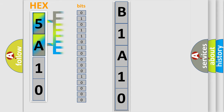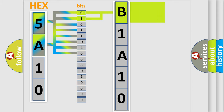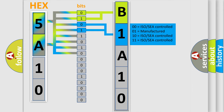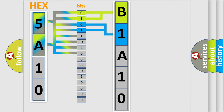The bit has two logical states: zero, which is low level, and one, which is high level. By combining the first two bits, the basic character of the error code is expressed. The next two bits determine the second character. The last four bits of the first byte define the third character of the code.